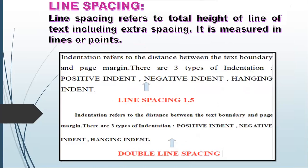The next concept is line spacing. Line spacing is the total height of the line — how much space you give between lines. Normally in a notebook when you finish one line and leave one blank line before writing the next, that gap is line spacing. There are three types: line spacing 1, line spacing 1.5, and double line spacing.